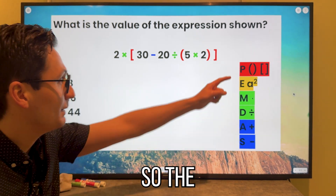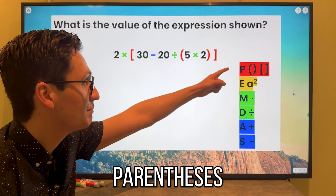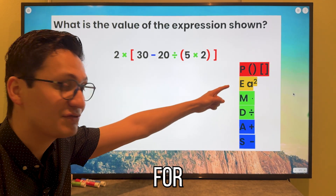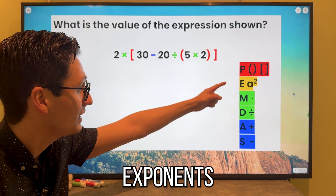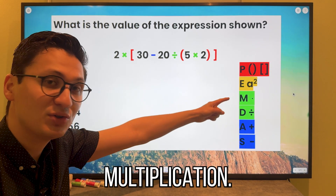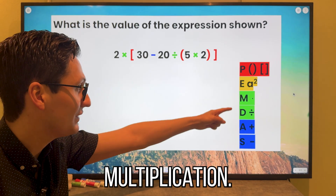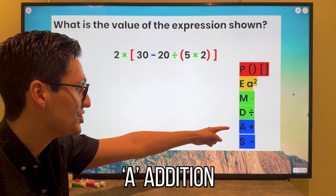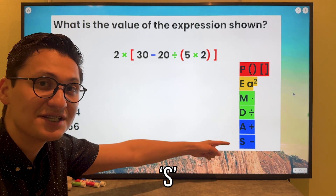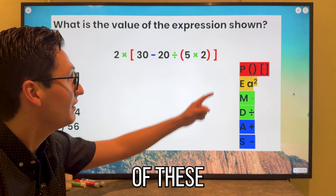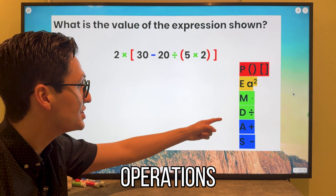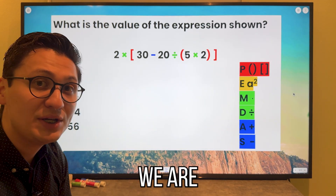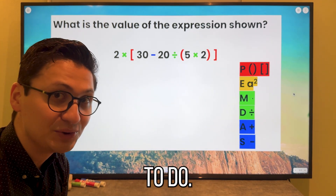The P stands for parentheses or brackets, E stands for exponents, M multiplication, D division, A addition, S subtraction. Whichever of these operations comes first, that is what we are going to do.